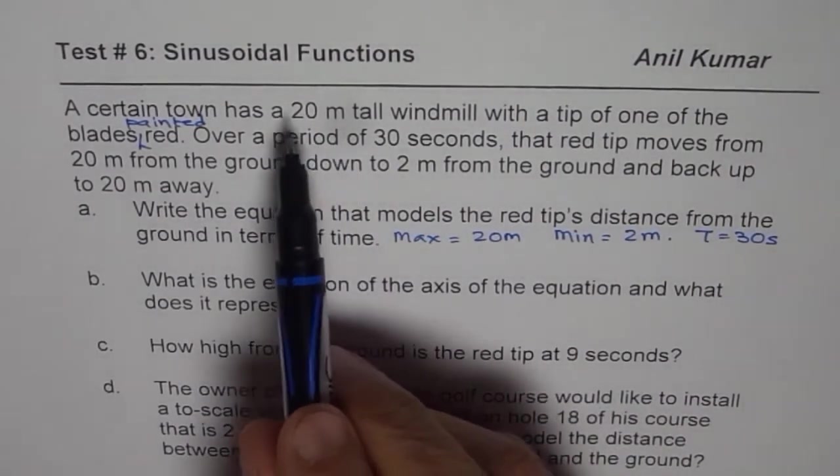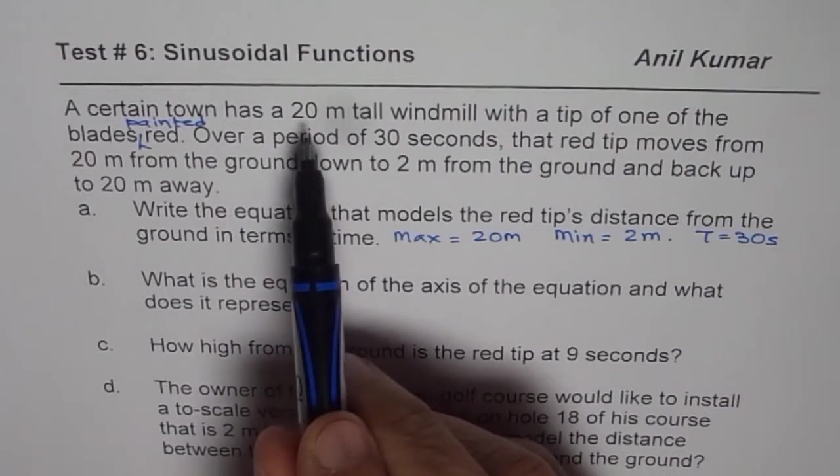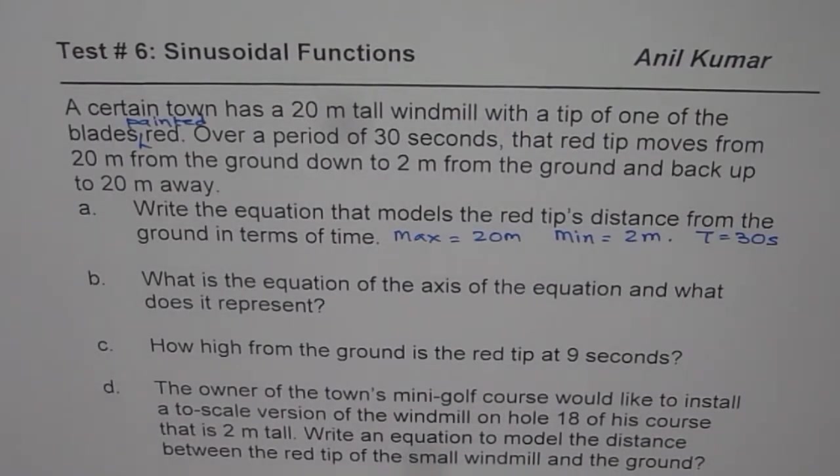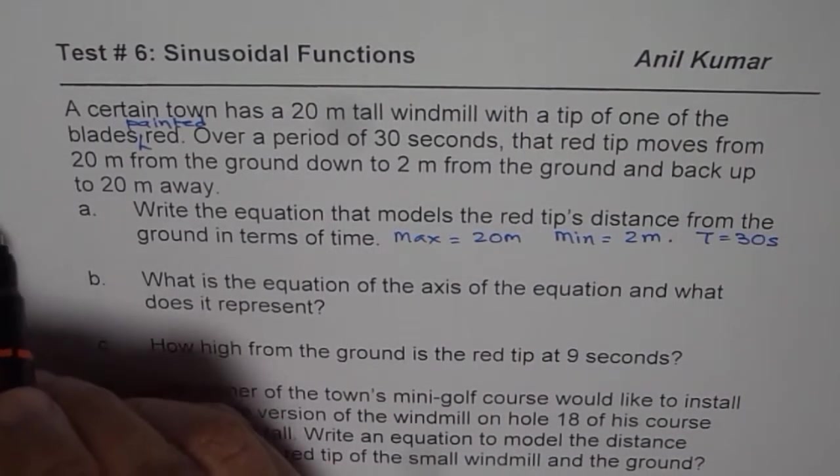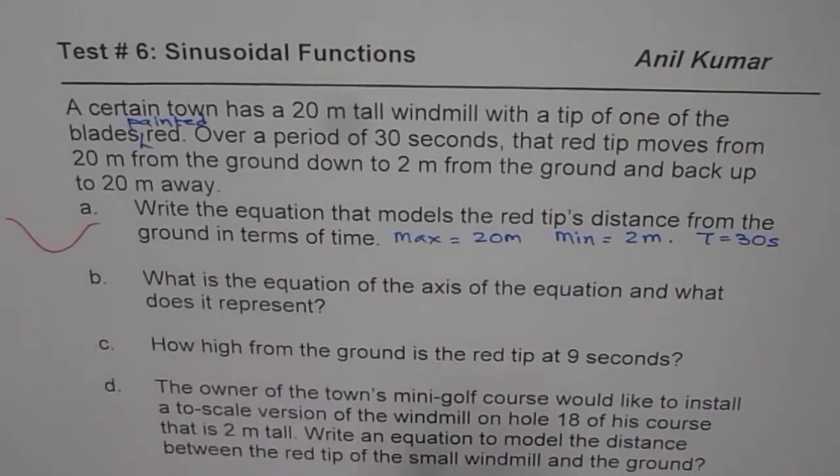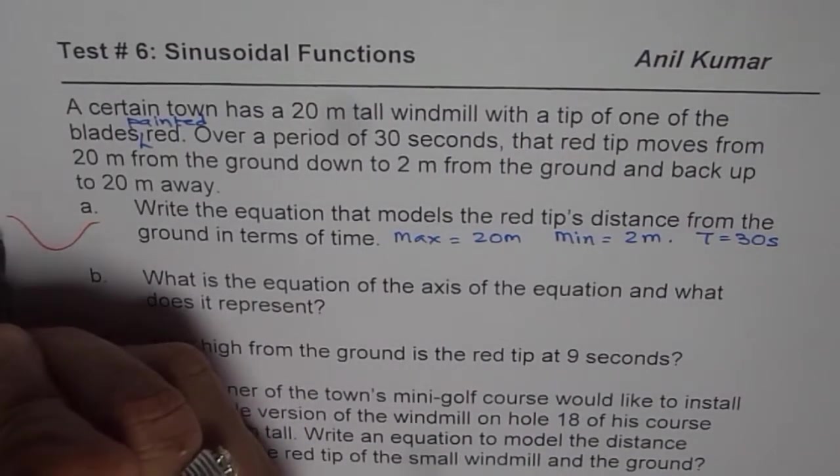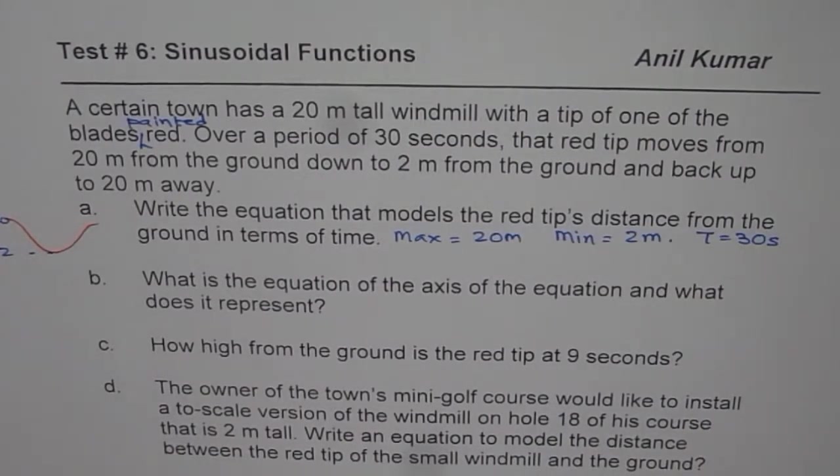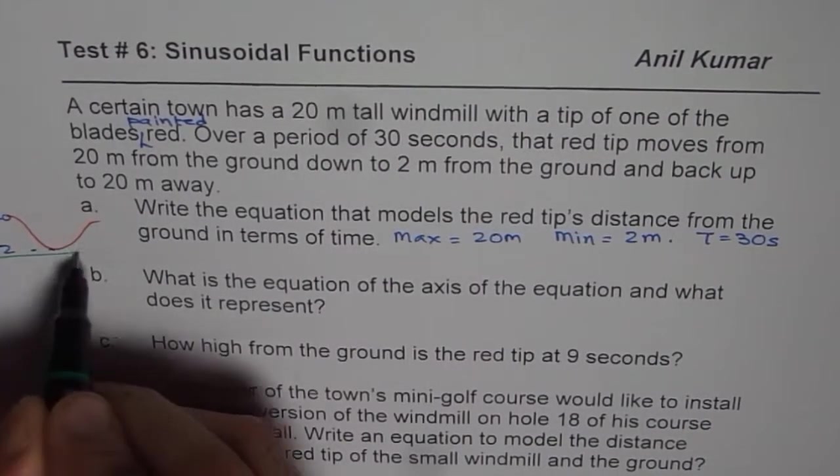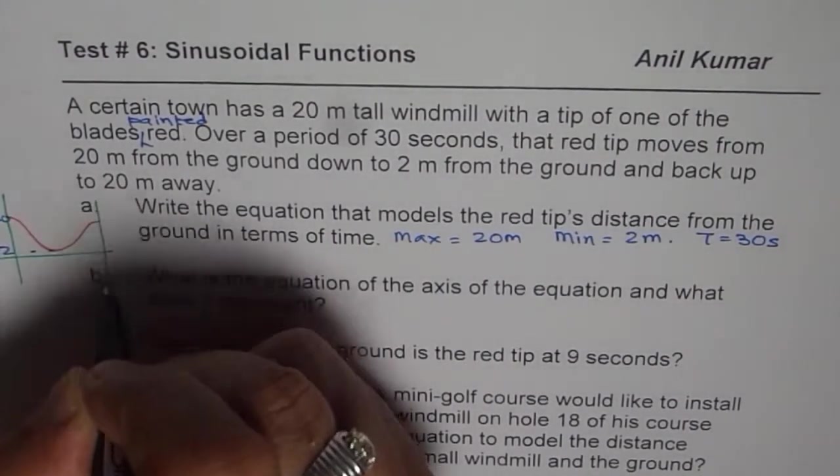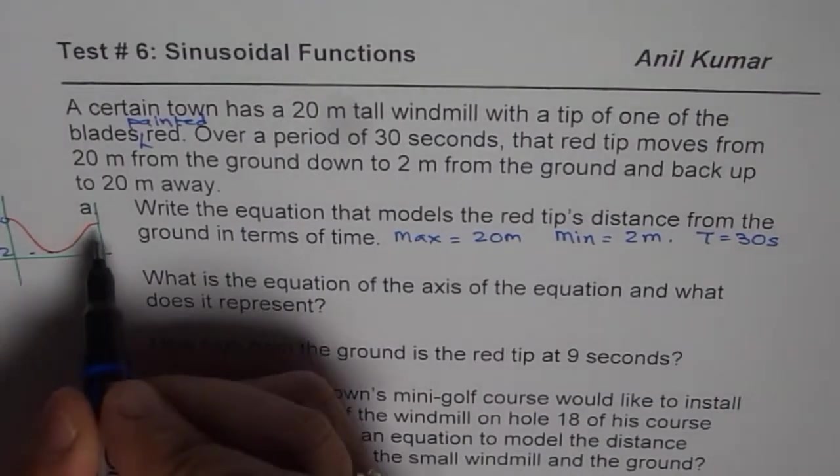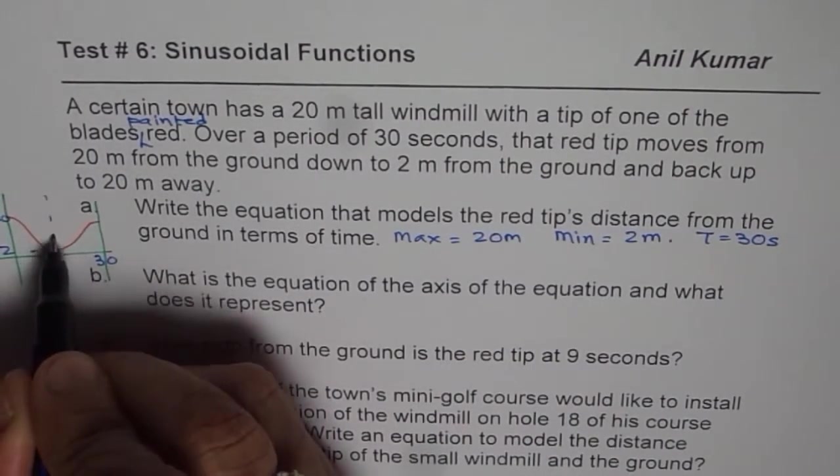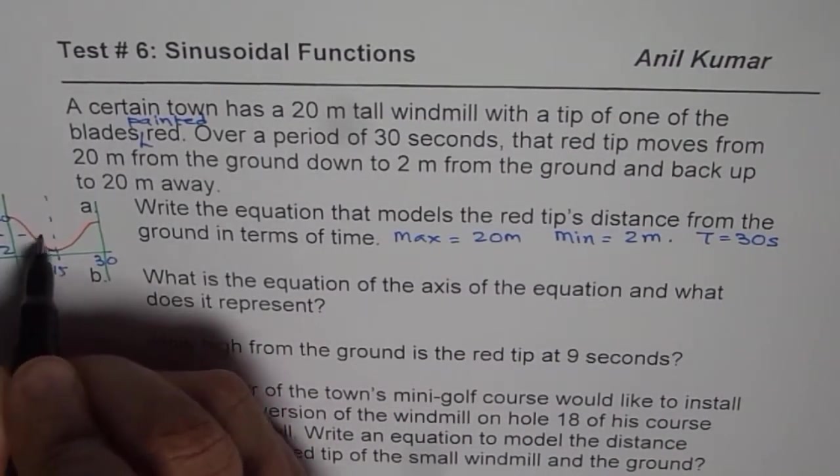Now, we are assuming that it has been set here, that it starts from the maximum. So that is the position where the blade is starting from. So let me sketch this a bit on the side. So let us say this is the one revolution we are considering. Now, it is clear that this is 20 and this is 2 meters above the ground. And this one time period is 30 seconds. So T is 30 seconds. Now, obviously, this is 15 and the axis is somewhere in between.